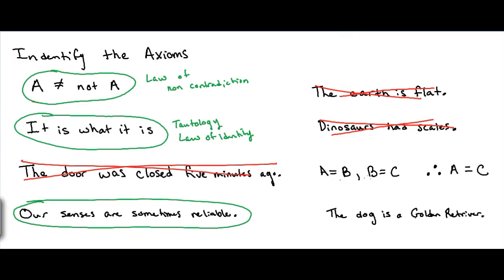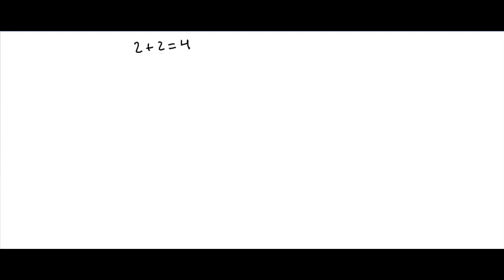A equals B, B equals C, therefore A equals C. This is one of Euclid's transitive property axiom. The dog is a golden retriever. Once again, we could probably do a DNA test and have minimal amounts of axioms, therefore to have maximal amounts of justification.